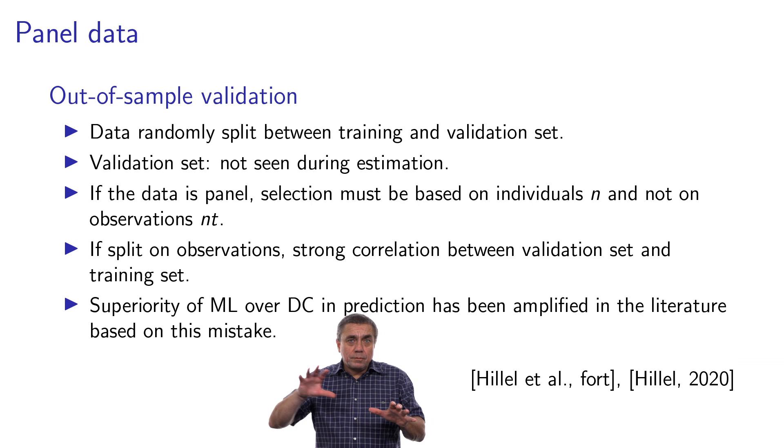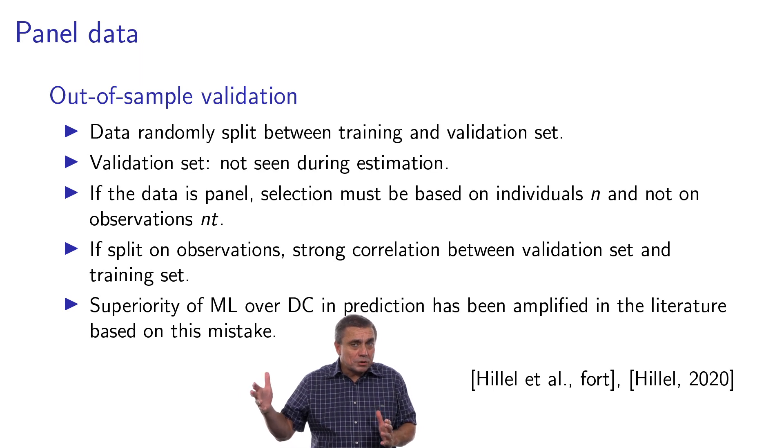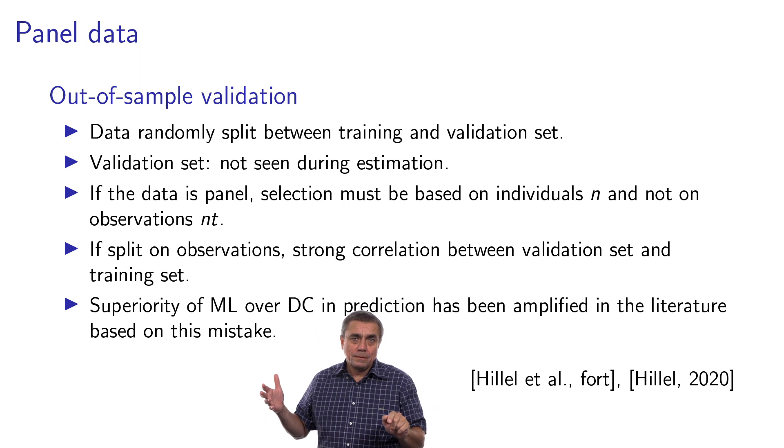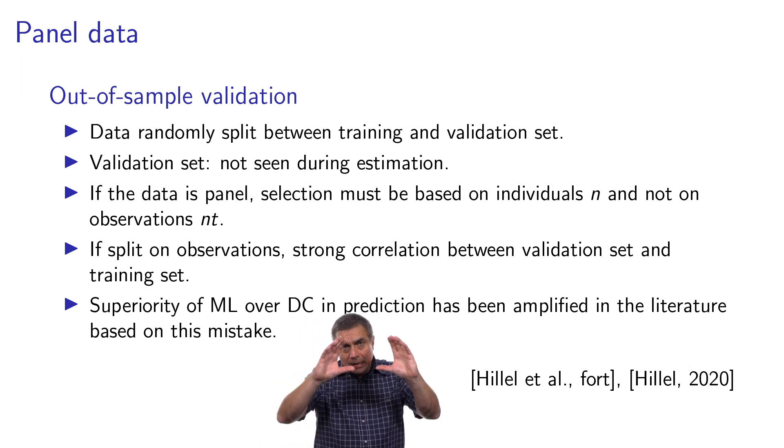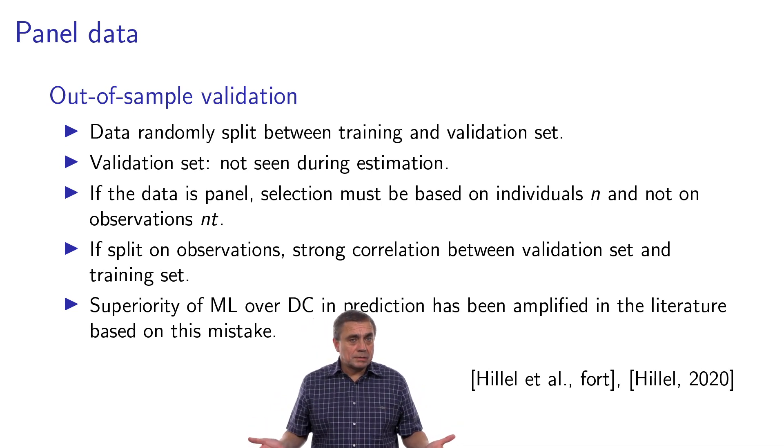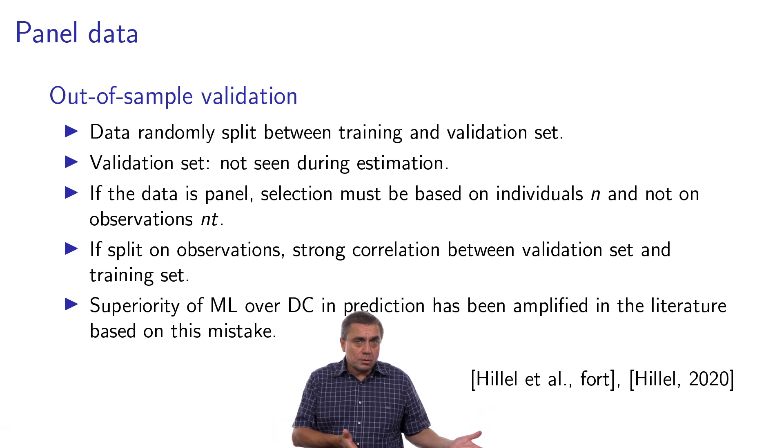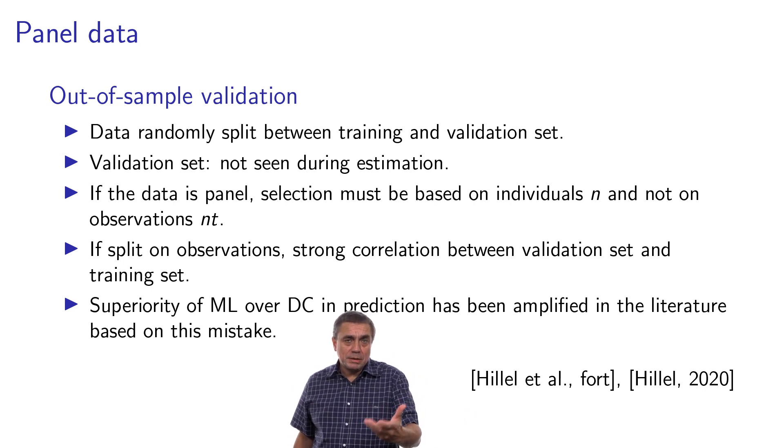So a mistake which is often done is that to prepare the validation set, the data are randomly selected across observations. But in this case, the validation set contains information that the model has been exposed to during the training phase, and so it biases the process. So the right way to do it is to select data for the validation set based on the individuals and not based on observations.